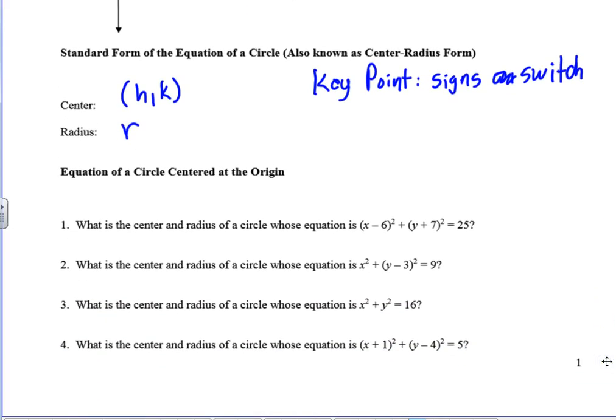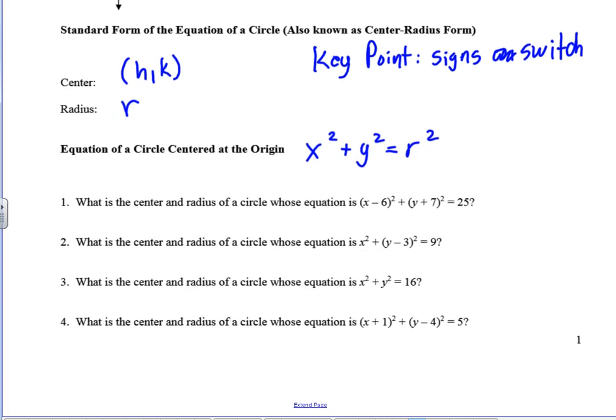And we'll see that here in just a sec when we do some of these examples. Okay, if we were to take the center of a circle and it was at the origin, what's the coordinates for the origin? Good, 0, 0. So this would just be x squared plus y squared equals r squared. We could write the 0 inside of the parentheses, but that isn't going to make any difference on it. Okay, so again, the key point is switch the signs.